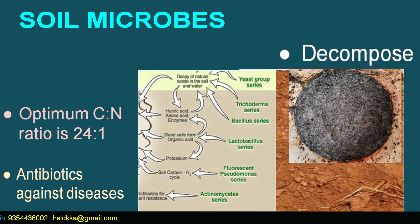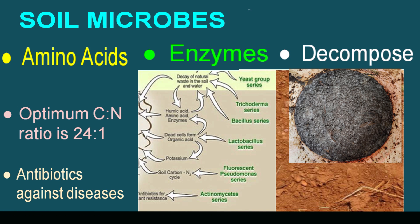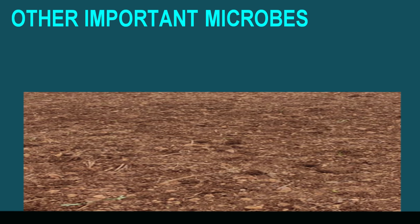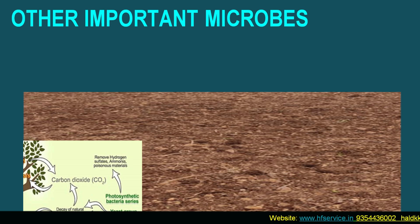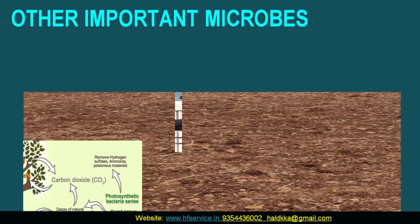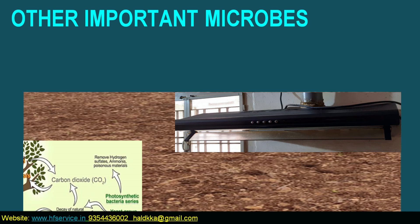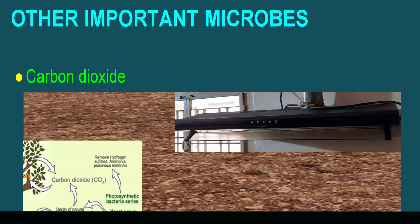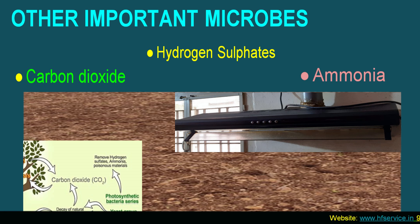And during this process they release some enzymes and amino acids for plants. Now this is very interesting — we know that to remove the smoke and gases from our kitchen we use chimneys, and yes, photosynthetic bacteria present in the soil do exactly the same thing, removing poisonous gases like carbon dioxide, hydrogen sulfates, and ammonia from the soil into the atmosphere.